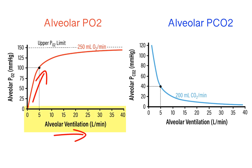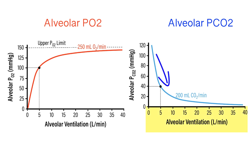Increasing alveolar ventilation increases the partial pressure of oxygen in the alveolar spaces, resulting in an increase in oxygen loading within the pulmonary capillaries, and ultimately an increase in the partial pressure of oxygen in the arterial blood. Additionally, the relationship between alveolar ventilation and alveolar PCO2 is inverse. Therefore, if PCO2 levels are high, the appropriate ventilatory response is to increase ventilation to bring PCO2 levels back down.